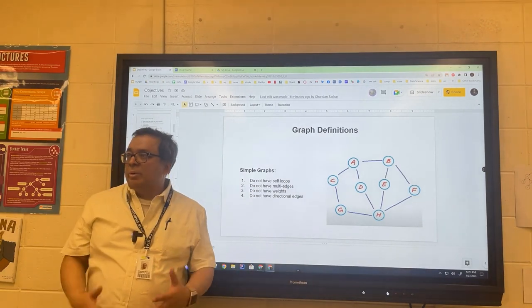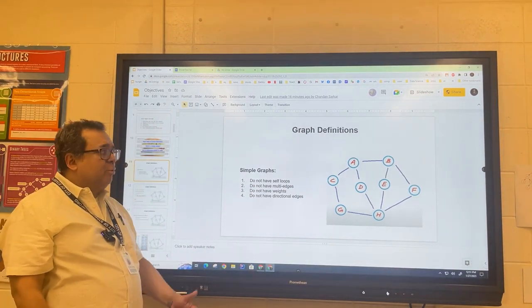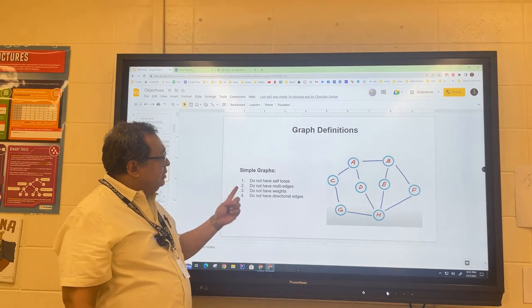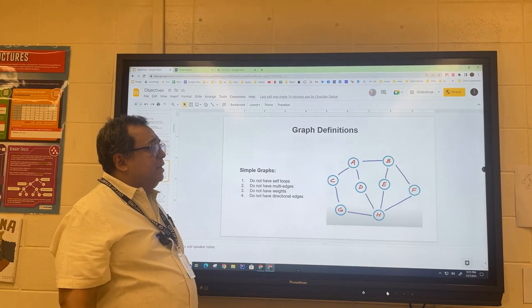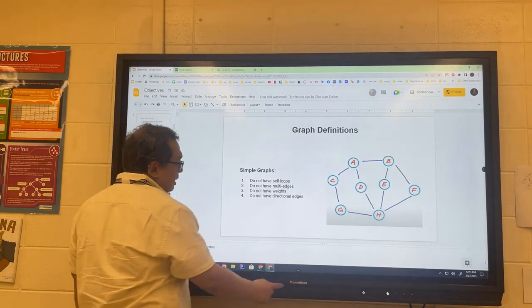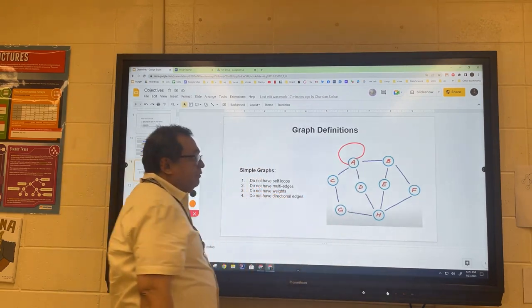Last time we were together we discussed some basic graph definitions, and I kind of forgot one. It's an important one. We refer to certain graphs as simple graphs, and simple graphs do not have self-loops. What do I mean by that? Here, for example, is a self-loop.